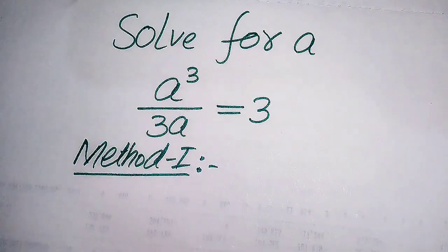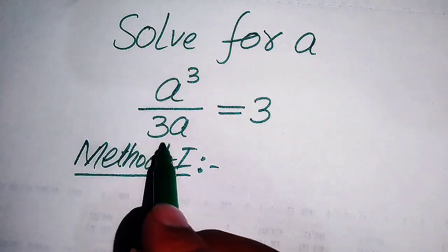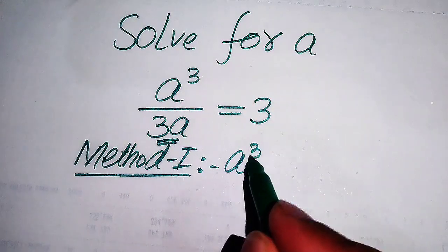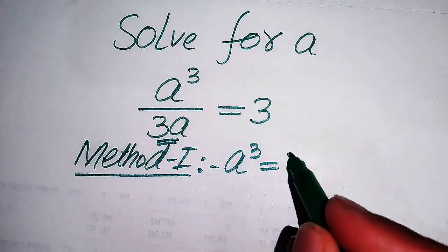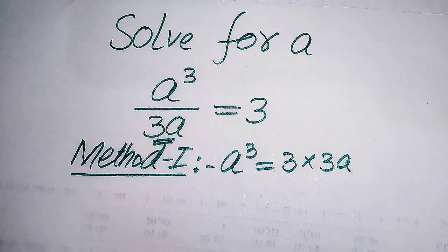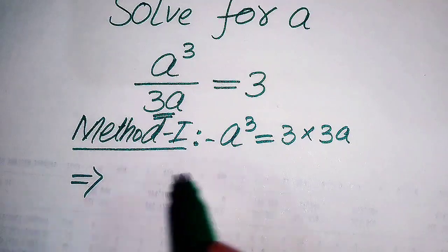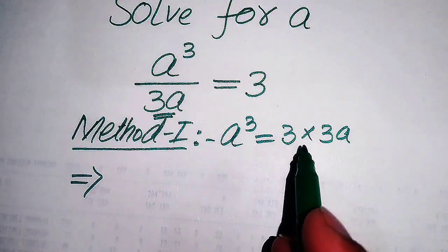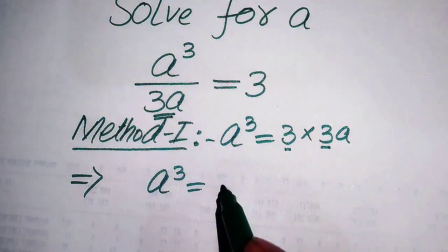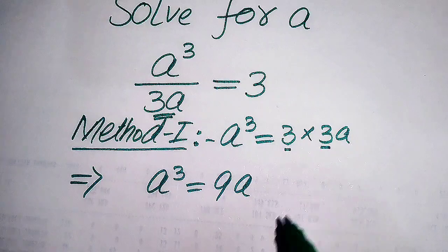In the first method, we move 3a from the left hand side to the right hand side. Since 3a is dividing on the left hand side, when we move it to the right hand side it multiplies, giving us 3 times 3a. When we multiply those constant terms, 3 times 3 becomes 9, so we get a cubed equals 9a.